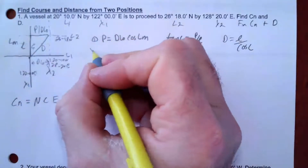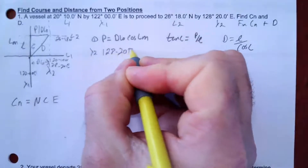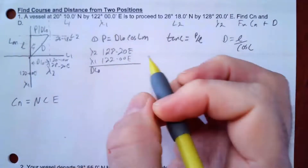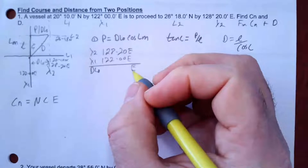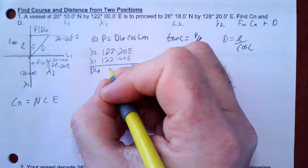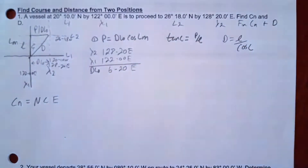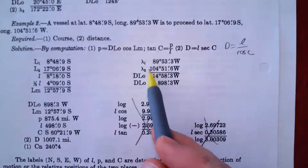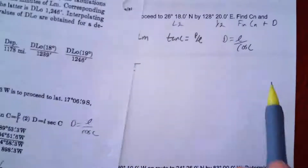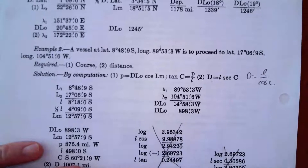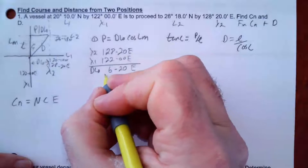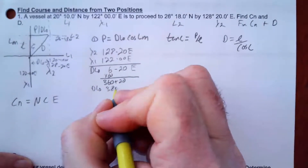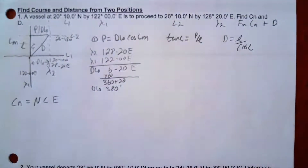Let me calculate D-low first. Longitude 2 is 128°20' east and longitude 1 was 122°00' east. Since I'm going in an easterly direction, D-low will be easterly. The subtraction gives me 6°20'. Now Bowditch converts degrees and minutes to all minutes, so I'll do the same: 6 × 60 = 360, plus 20 already there, gives D-low = 380 minutes of arc.